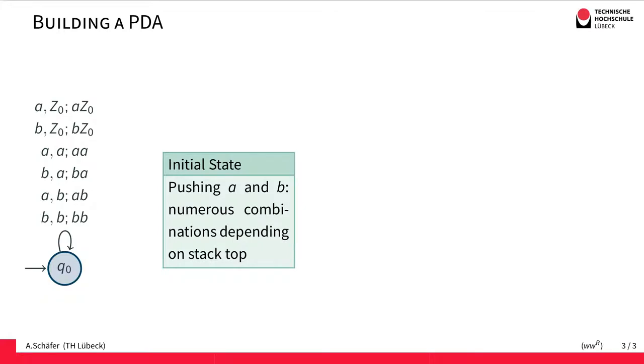However, there are much more combinations. Because there might be, after the first push operation, there won't be the Z0 on top, but an A or a B. And for each combination, we have to define what to do. So, for example, if we read a B and the topmost symbol is a B, then we simply add a B.